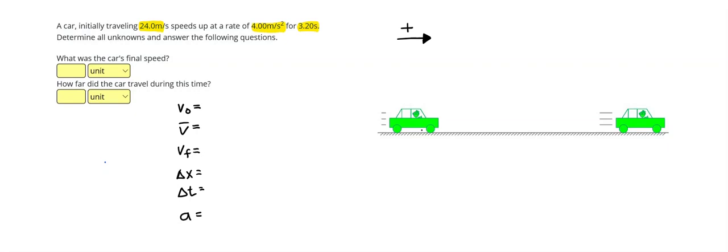All right, so in this problem, it's a one-dimensional motion problem, so I'm looking for three given values. I've highlighted three numbers, so that's a good sign.